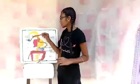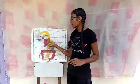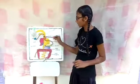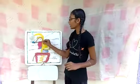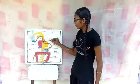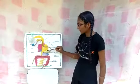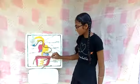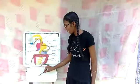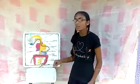Our digestive system starts with the mouth and ends with the anus. When we take food, it goes through the mouth, then the pipe, then the stomach, then the small intestine, then the large intestine, and comes out through the anus.